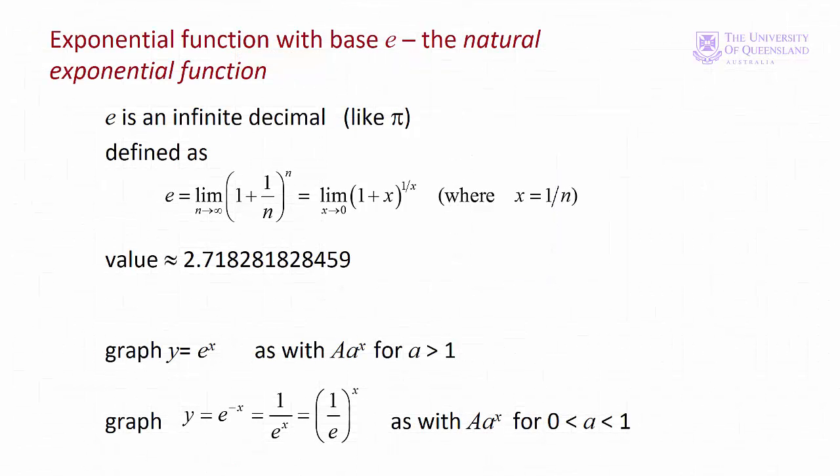A special case of the exponential function is the natural exponential function. In this function the base is e. e is a constant and an irrational number that is an infinite decimal like pi. The natural exponential function has many useful mathematical properties. We'll see one of those next week when we see that the first derivative of e to the x is equal to the function itself.